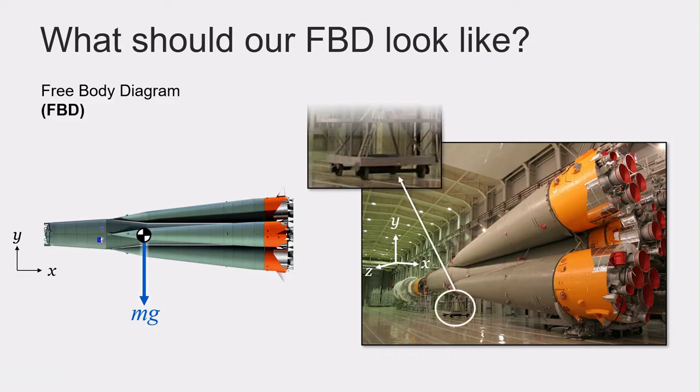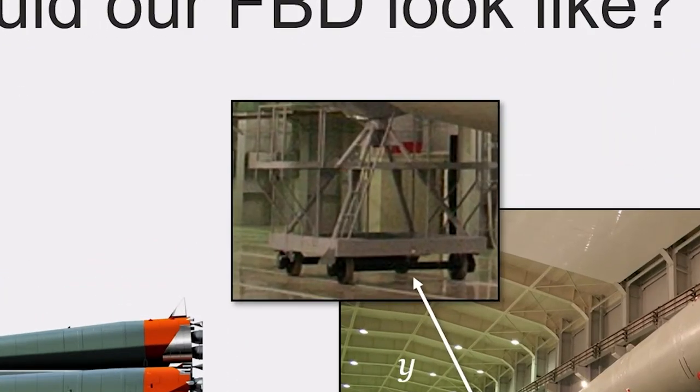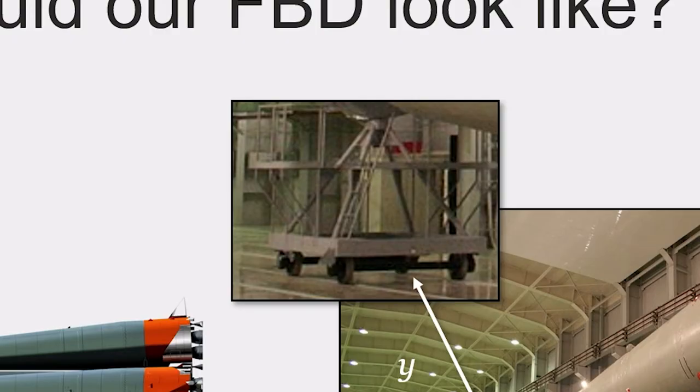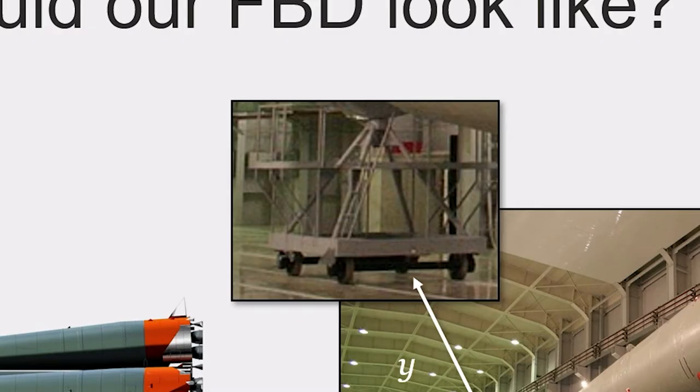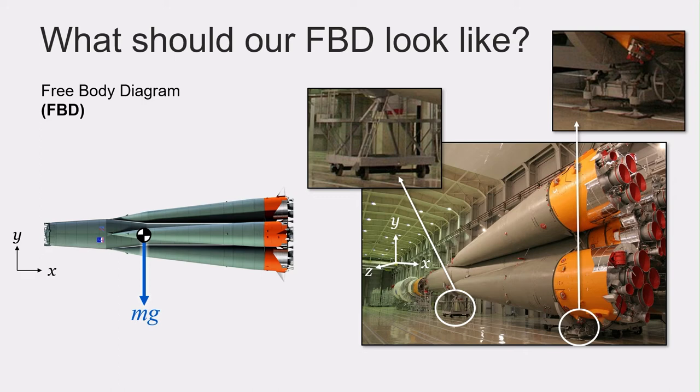If we take a close look at our rocket, we see that there are two supports at the front and back of the rocket. The front support is on wheels, so it will allow the rocket to slide around the plane of the floor, but prevents it from moving downwards through the floor. In other words, this support constrains the translational degree of freedom of the rocket in the y direction.